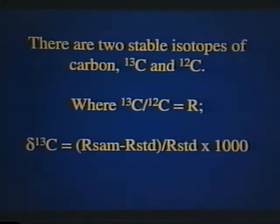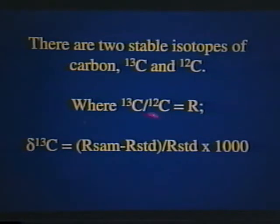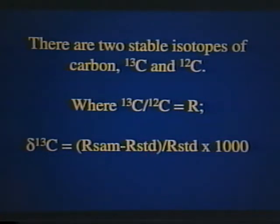Stable carbon isotopes have been used for some time in environmental geochemistry. For carbon bearing compounds there are two stable isotopes of carbon: carbon-12 and carbon-13. An isotopic analysis involves measurement of the C-13 to C-12 ratio to establish a delta C-13 signature, where this signature is simply defined as the C-13 to C-12 ratio in a given sample measured with respect to an established international standard.